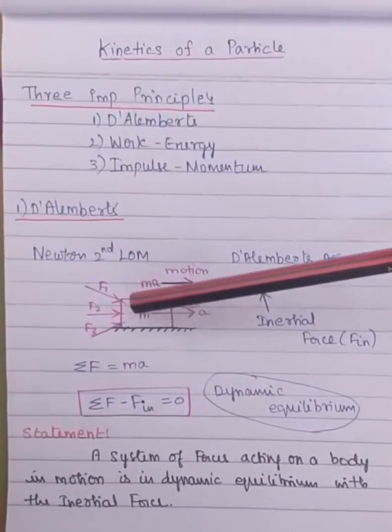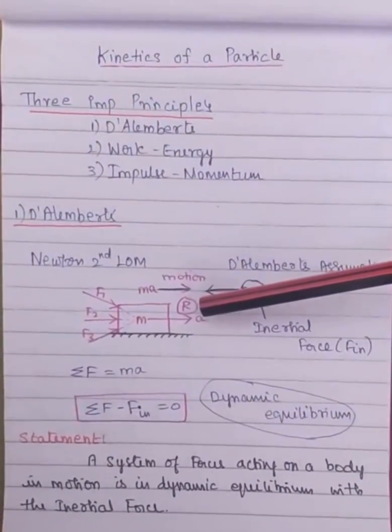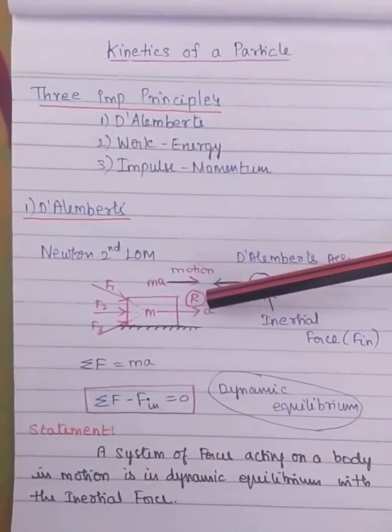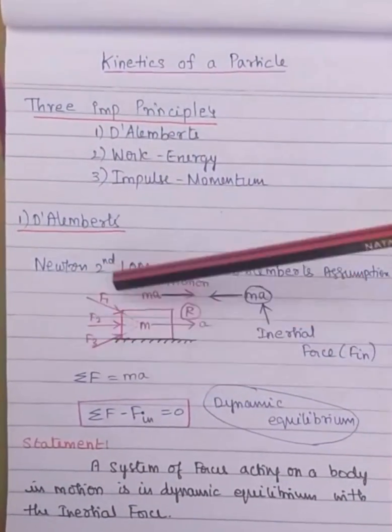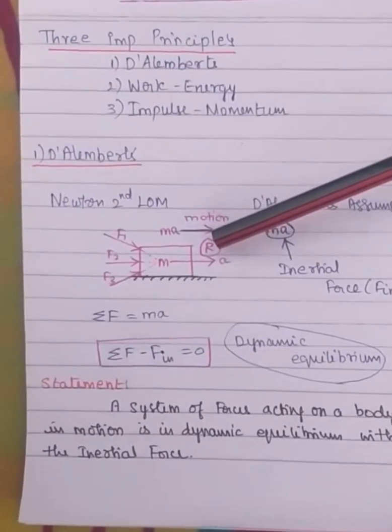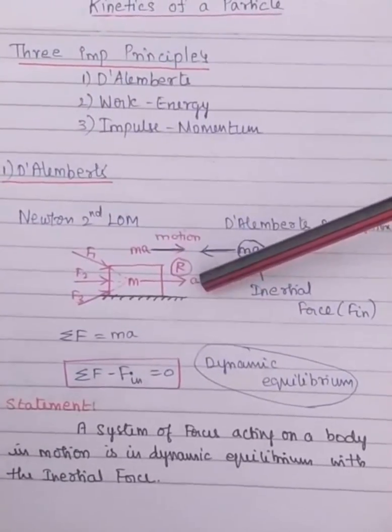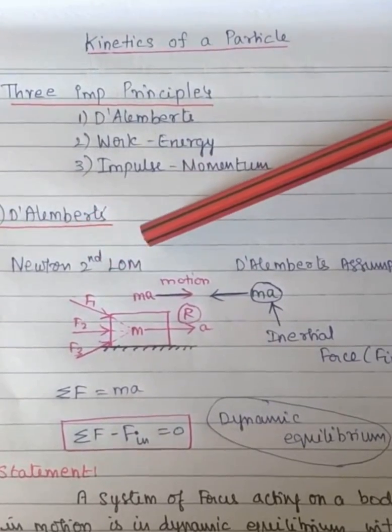The system of forces acting on the body can be replaced by a single force called the resultant force, which will produce the same effect as all these individual forces. This resultant force will induce the body to move along this direction with acceleration a. According to Newton's second law of motion, the summation of the forces acting on the body is equal to mass times acceleration.